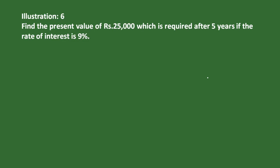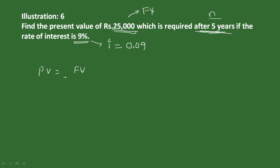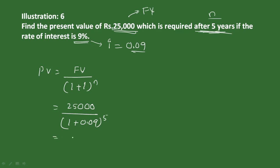Illustration: Find the present value of ₹25,000 which is required after 5 years if the interest rate is 9%. So future value is 25,000, n equals 5 years, and i equals 0.09. Apply the formula: present value equals future value divided by (1 plus i) to the power n.